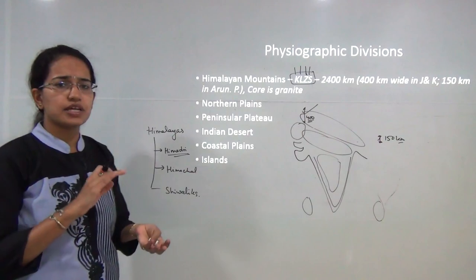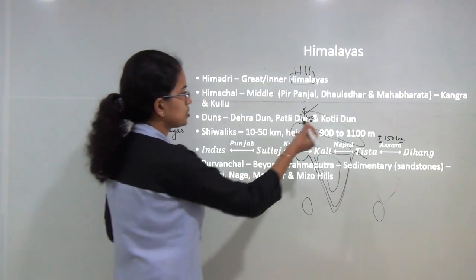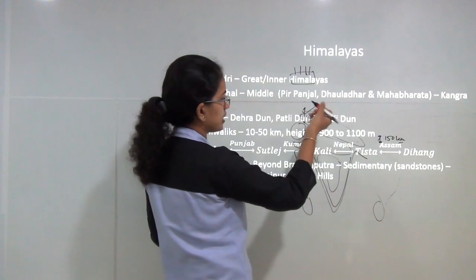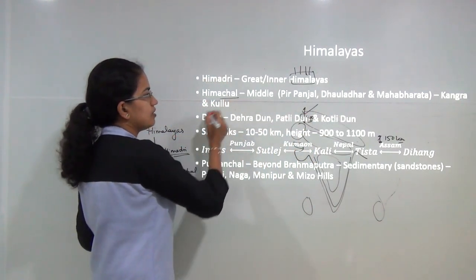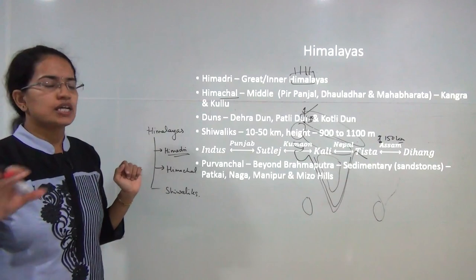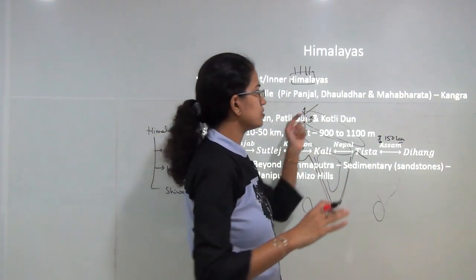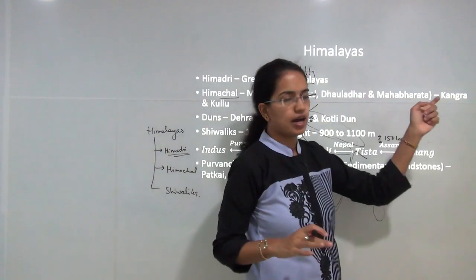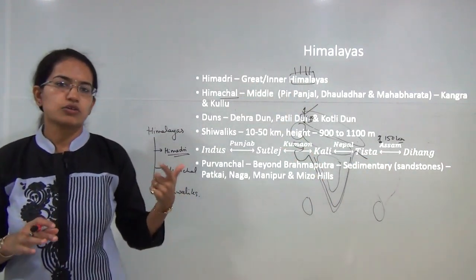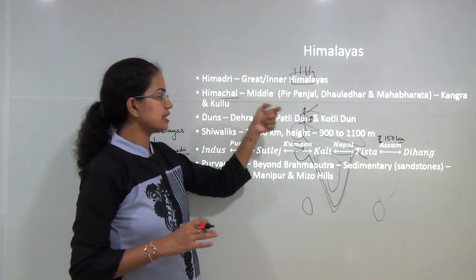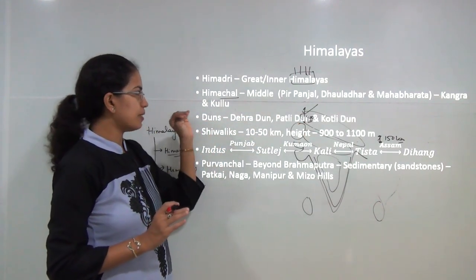The core of the Himalayan mountain is made up of granite. Next to the Himadris, also called the Greater Himalayas, you have the Himachal — the middle Himalayas. The common ranges of the middle Himalayas are Pirpanjal, Dholadhar, and Mahabharata range. The major hill stations here include Kangra and Kullu.